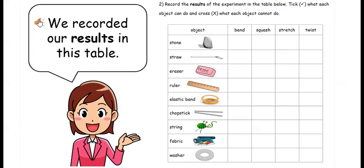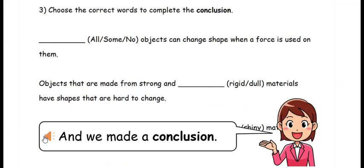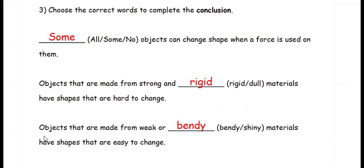We recorded our results in a table and we made a conclusion. We chose the correct words to complete the conclusion. Some objects can change shape when a force is used on them. Objects made from strong and rigid materials have shapes that are hard to change. Objects made from weak or flexible materials have shapes that are easy to change.